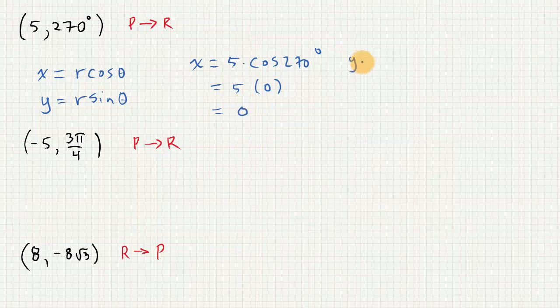And the y value will be r times sine of 270. Sine of 270 is negative 1, so the y value is negative 5. So the conclusion here is that the ordered pair in rectangular coordinates is 0, negative 5.